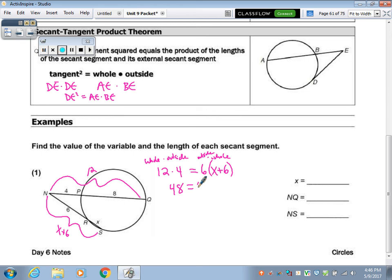Alright, then you can just do this algebra. That's 48, distribute, minus 36 on both sides, divide 6 on both sides. So the X is 2, and the whole thing is 12. And NS, that whole thing will be an 8, because 6 plus 2. Whole times outside, whole times outside.